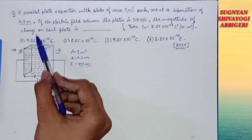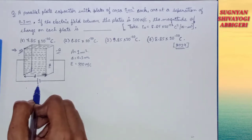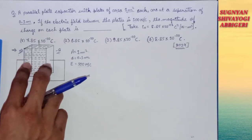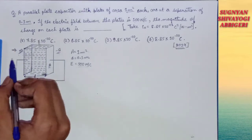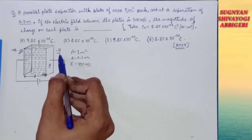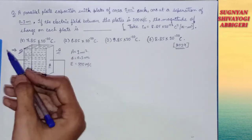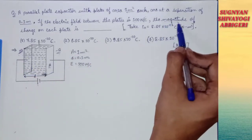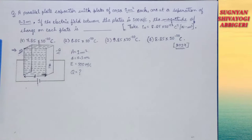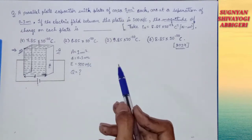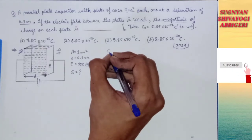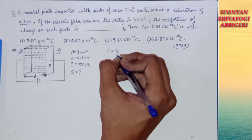We need to find the magnitude of charge on each plate. Whenever we connect a battery to a parallel plate capacitor, charges equal in magnitude are formed on both plates — Q and Q — but opposite in sign: plus Q on one plate and minus Q on the other. Since the question asks only for the magnitude, we simply need to find the value of Q.